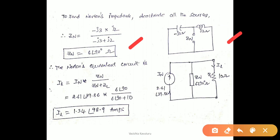This impedance is called Norton's impedance. After calculating Norton's current and Norton's impedance, we draw the Norton's equivalent circuit: Norton's current with a parallel Norton impedance, followed by the load impedance ZL of 10 ohms. We calculate the load current IL using the current division rule: IL equals IN multiplied by ZN divided by ZN plus ZL. ZN is 6 at an angle 90 degrees, giving IL as 1.34 at an angle 98.9 amperes.